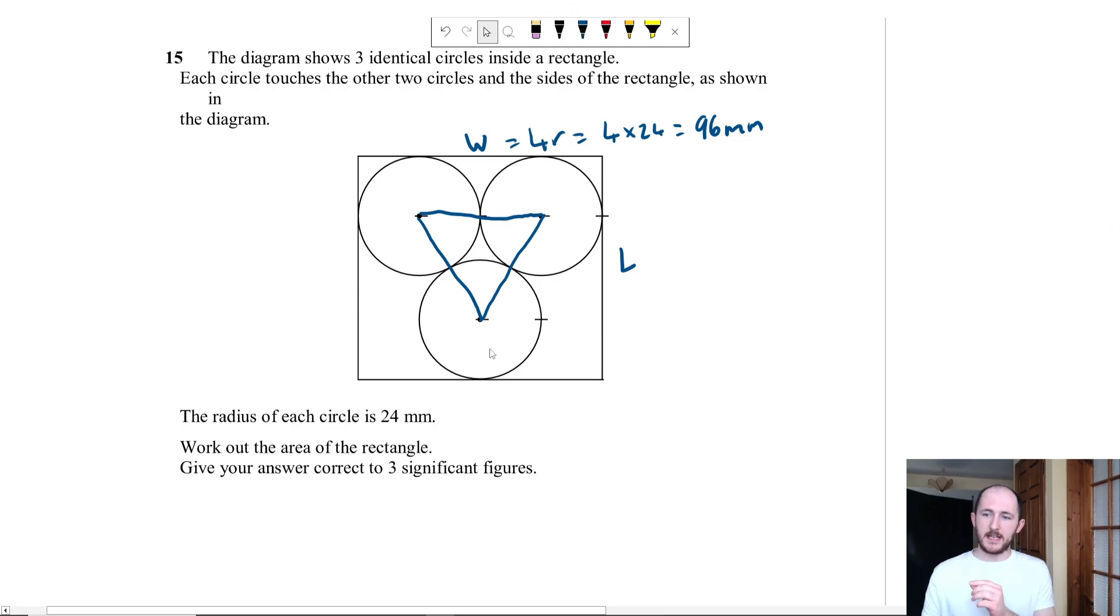First of all can you see that each of these sides is just two times the radius because they're identical circles so we have radius radius so that's two radii that's two times the radius and that's two times the radius so that's an equilateral triangle which basically means that all of the sides are the same and all of the angles are the same so all three of these angles are 60 degrees.